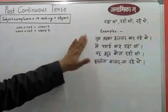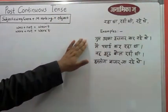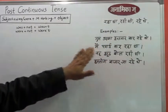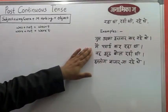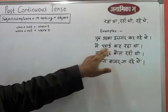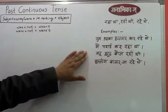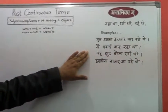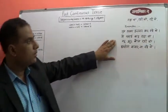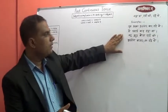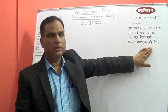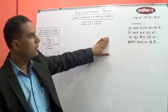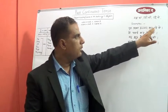In the past, this action was going on — similarly 'main padhai kar raha tha': at some point of time in the past this action of study was going on. Again, an action which was happening in the past — 'hum log bazar ja rahe the' — this also belongs to the same tense.